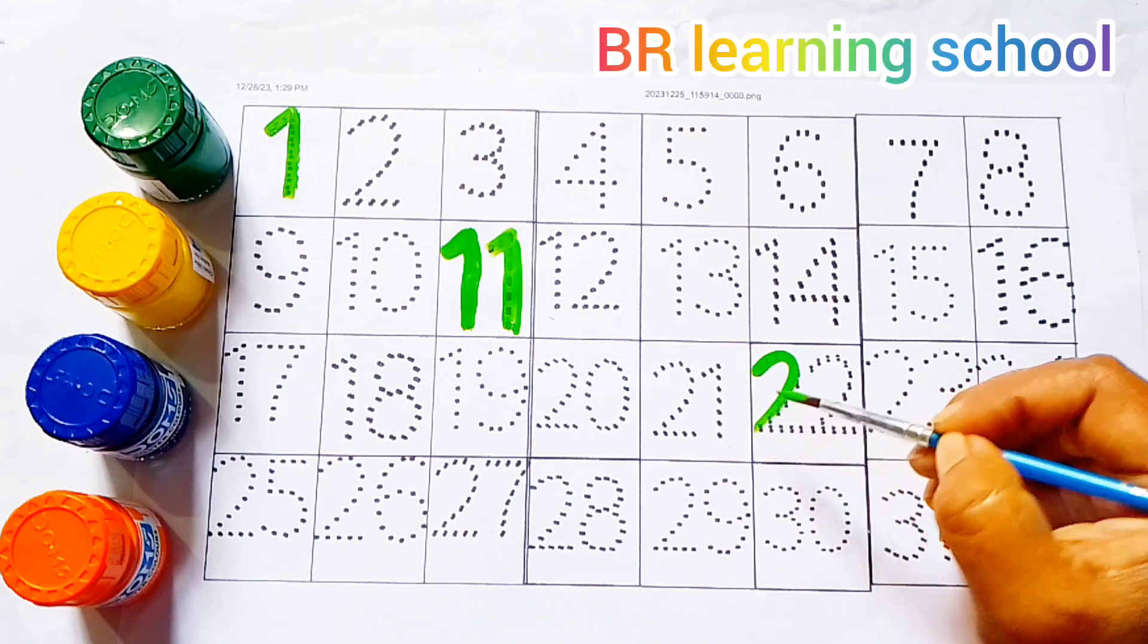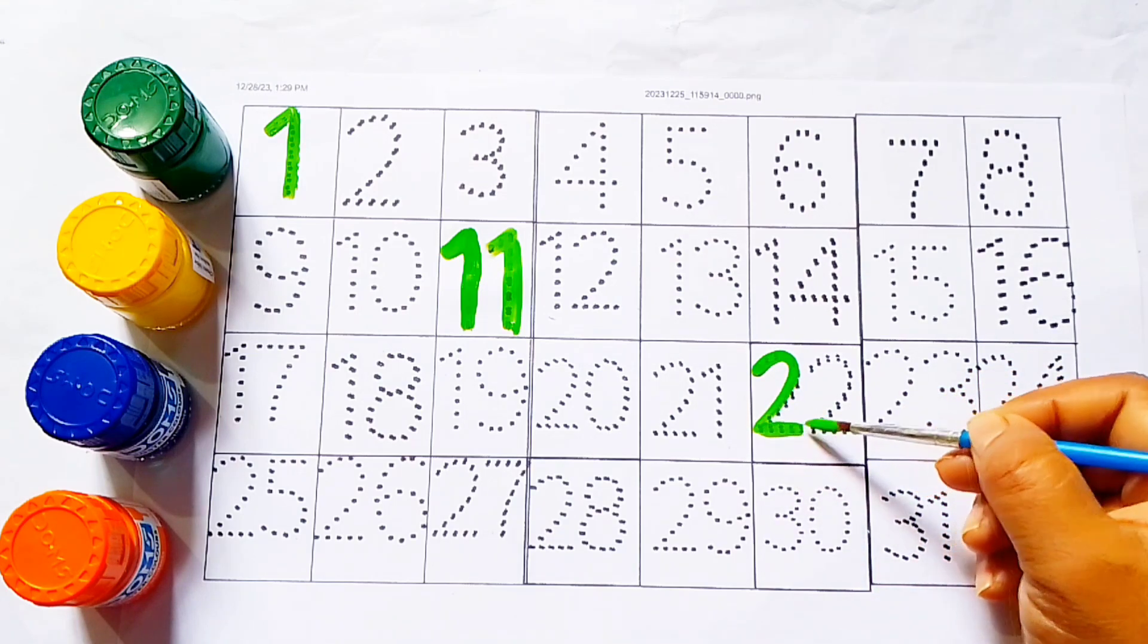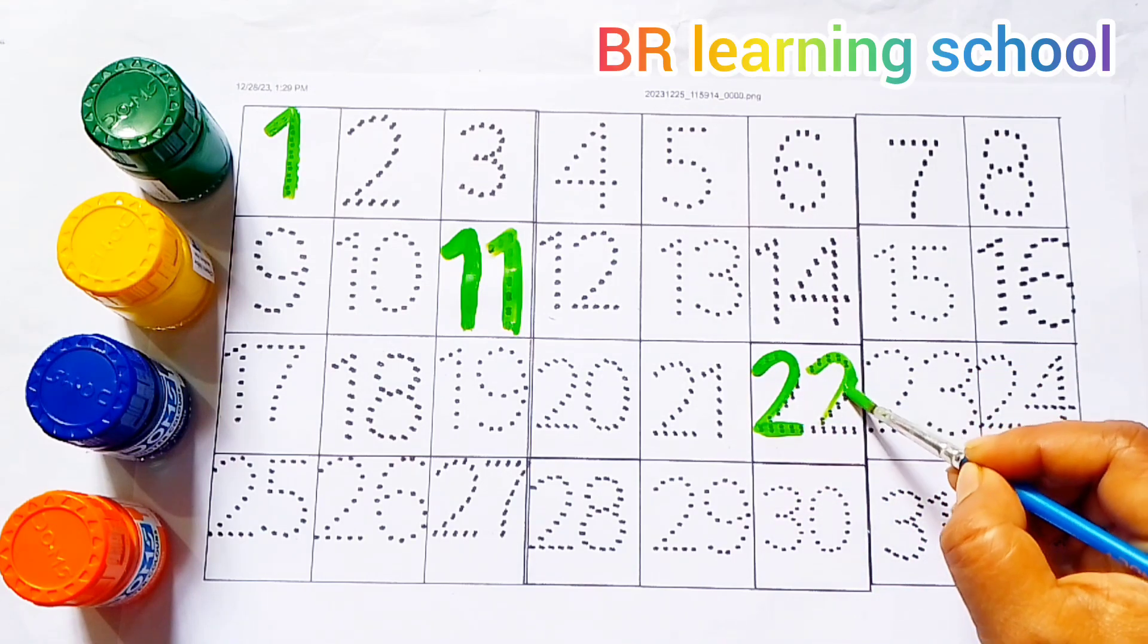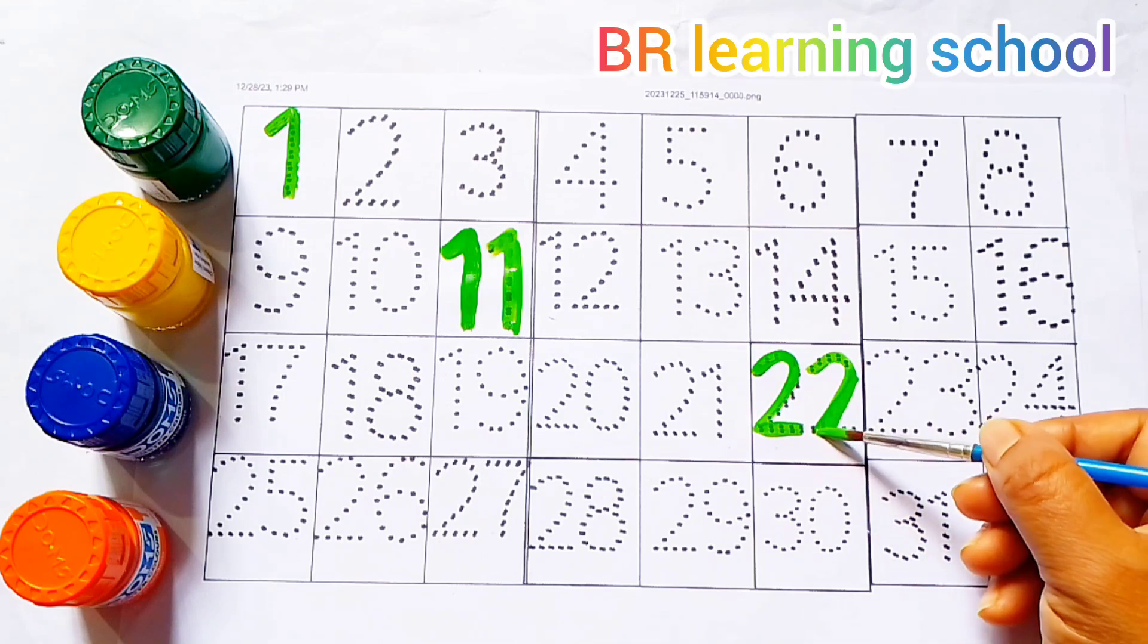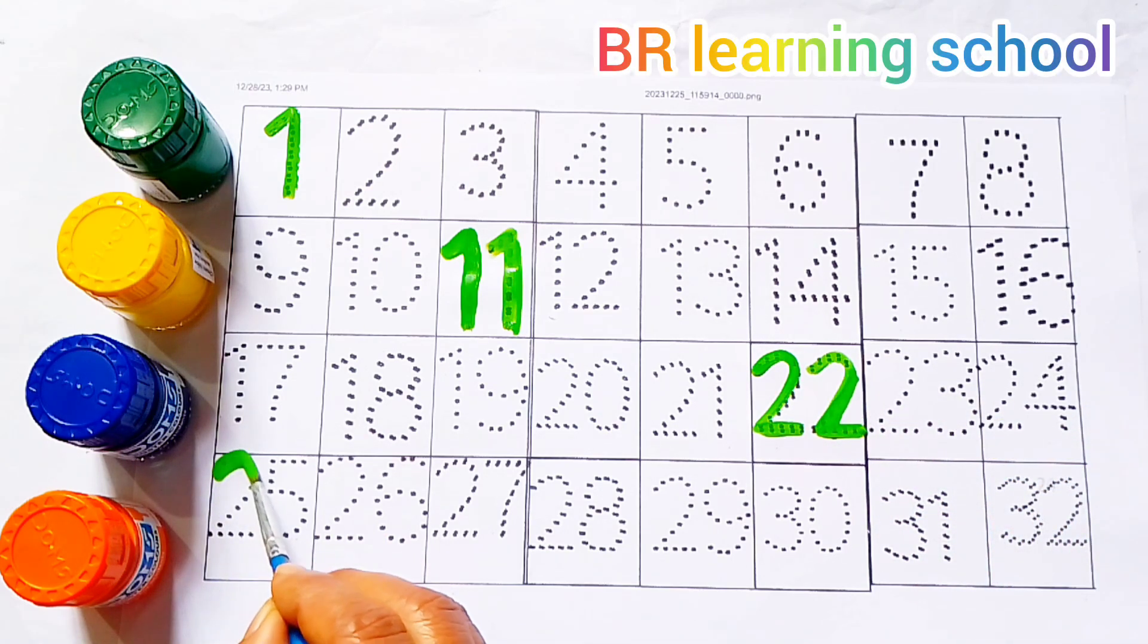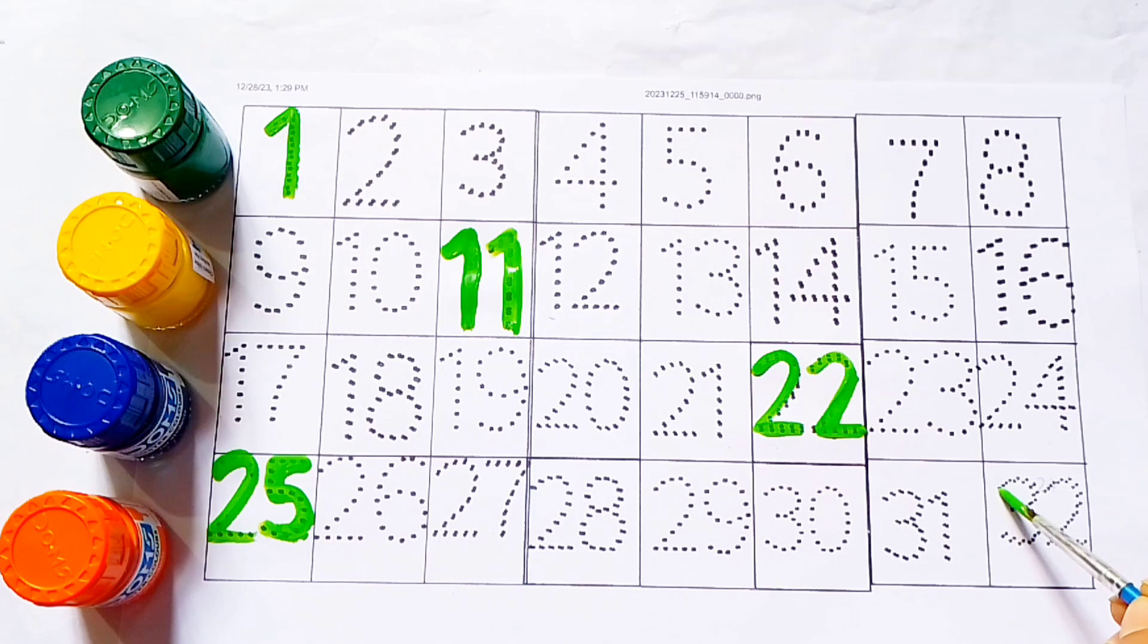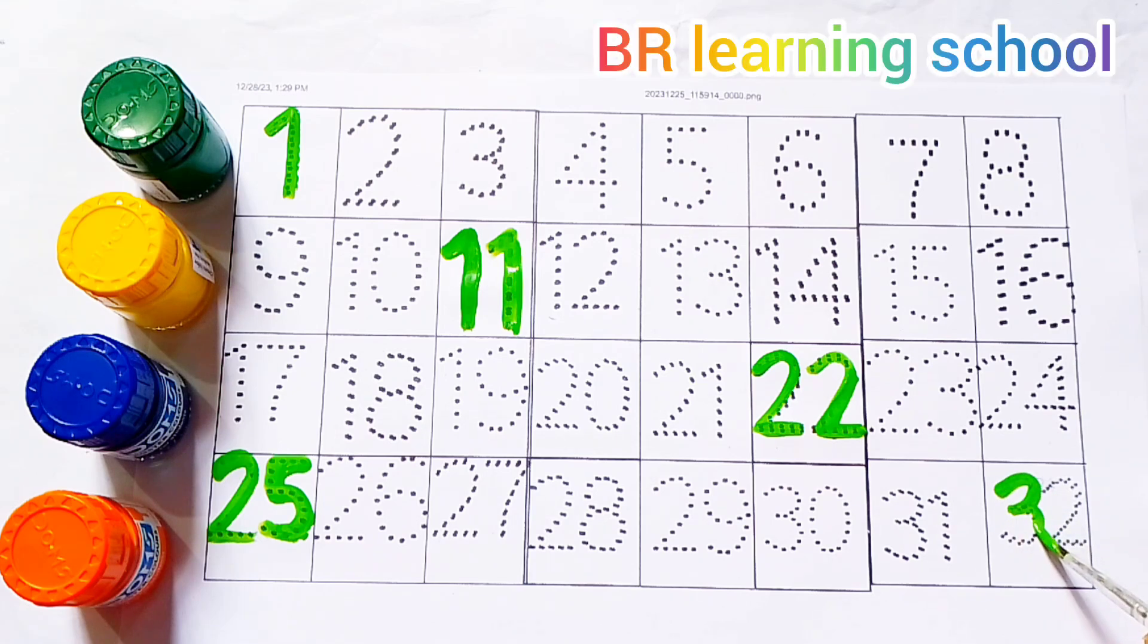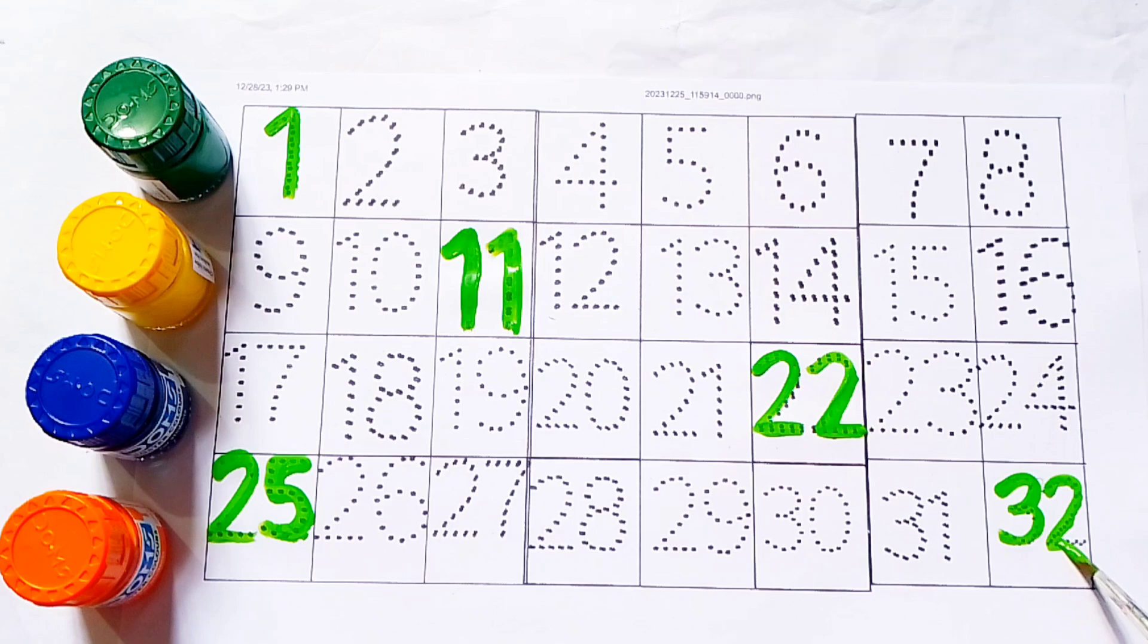22, 22. Green color. 2, 2, 22. 25, 25. 2, 5, 25. 32, 32. 3, 2, 32.